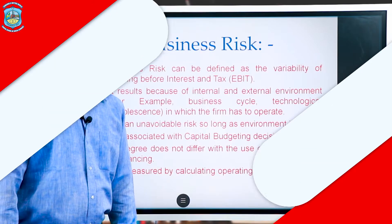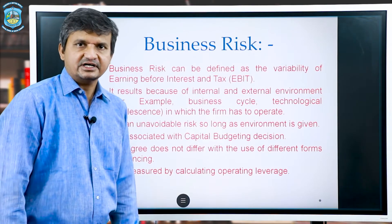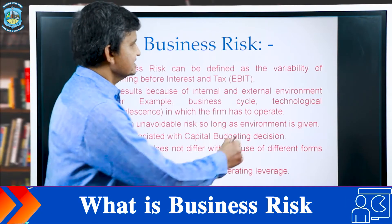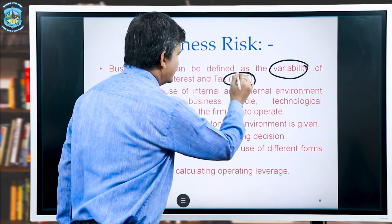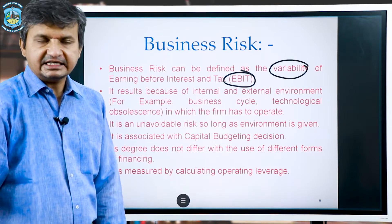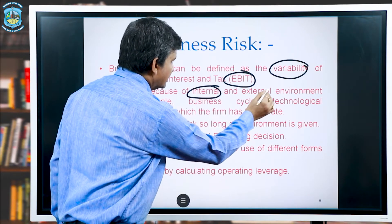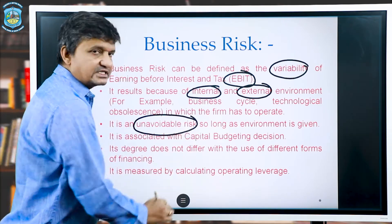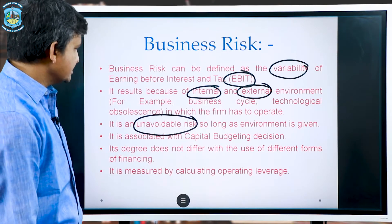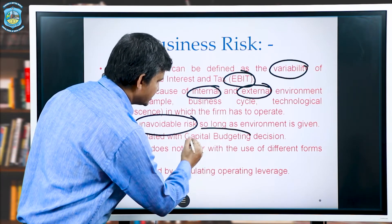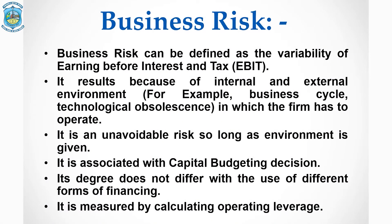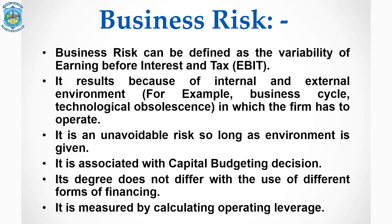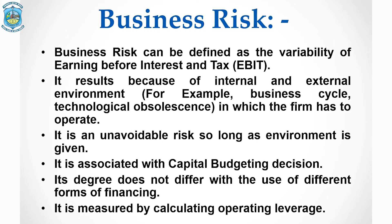Before we go into the technicalities of leverages, let's study two different risks. The first is business risk, which is the variability of EBIT. It results because of internal and external environment, and it is an unavoidable risk. It is associated with capital budgeting decisions, does not vary with financing patterns, and is measured by calculating operating leverage.